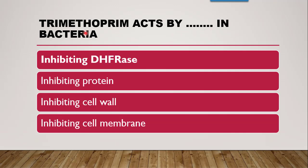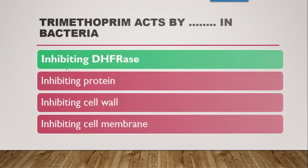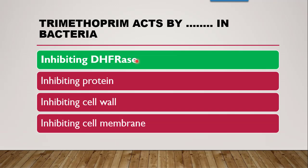Next question: trimethoprim acts by dash in bacteria. Trimethoprim and sulfamethoxazole together form cotrimoxazole. Sulfamethoxazole, being a sulfonamide, inhibits DHFS. Trimethoprim works on the next step — DHFA to THFA conversion — by inhibiting DHFR (dihydrofolate reductase). It does not inhibit protein, cell wall, or cell membrane.